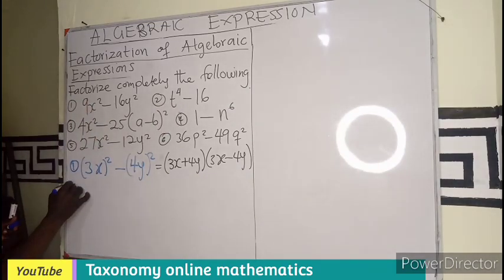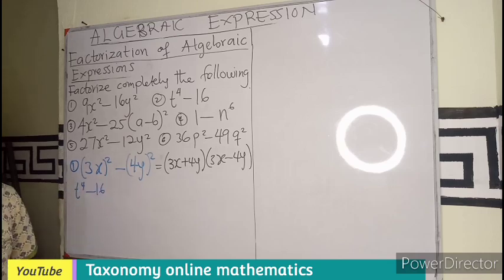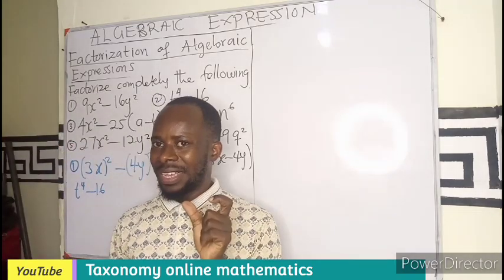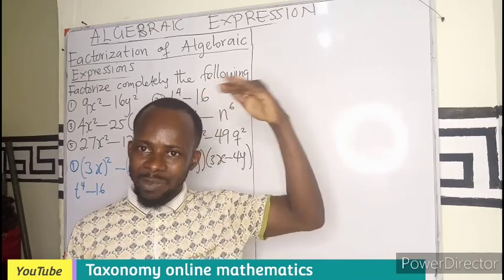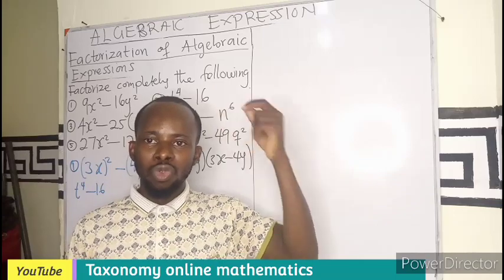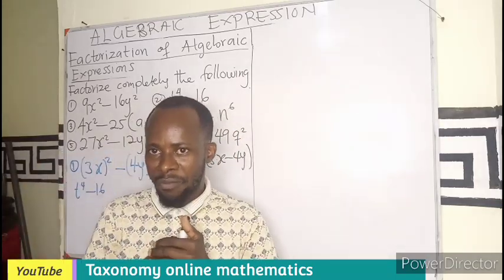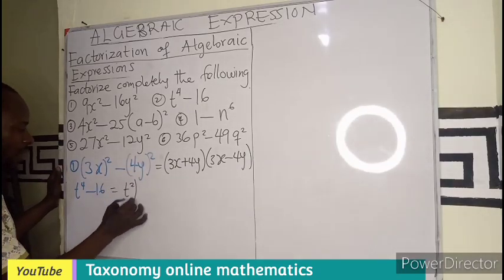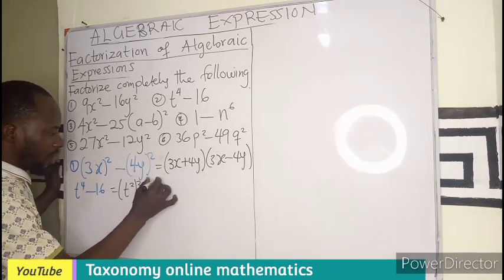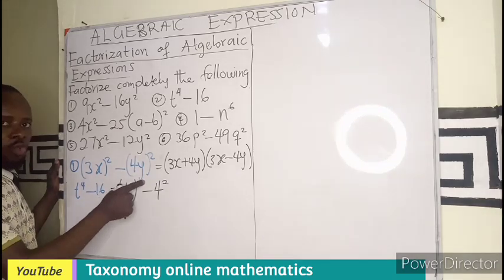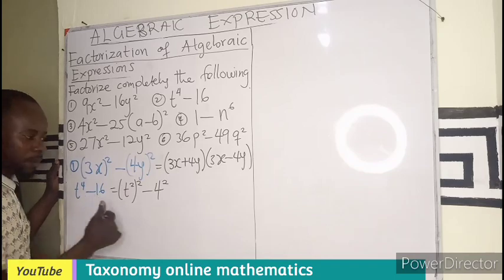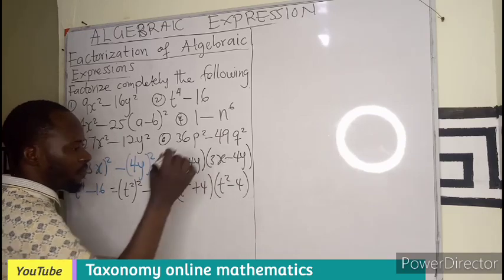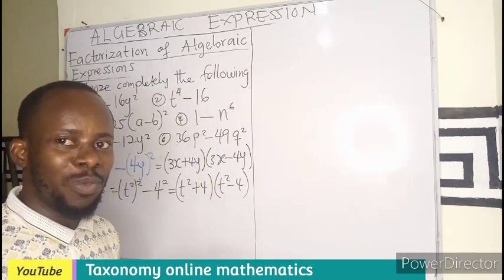The second example is T exponent 4 minus 16. If I look at T to the power 4 — it has a power of 4, so it looks not to be a square, but the exponent can be broken into indices to mean T squared all squared. Looking at 16, it is also a perfect square of 4, so I can rewrite this as T squared all squared minus 4 squared. This becomes difference of two squares: T squared plus 4, times T squared minus 4, as our final answer.